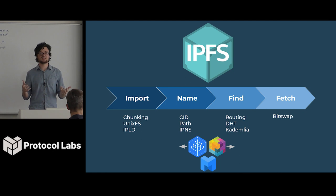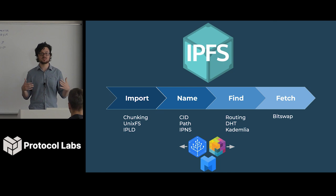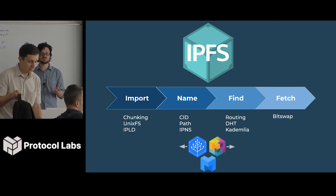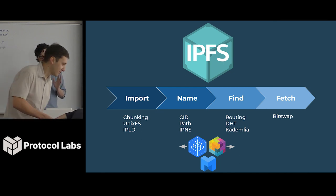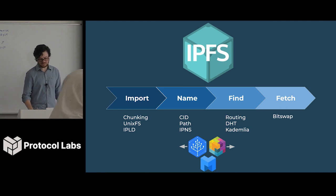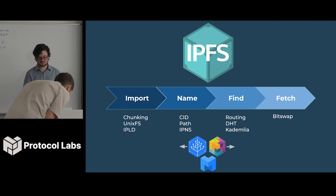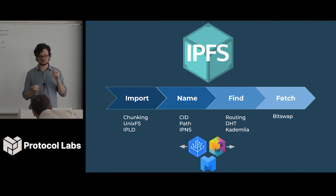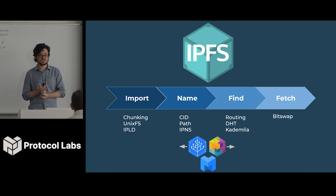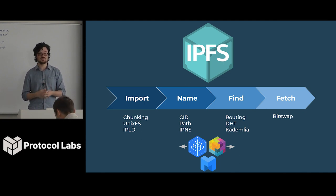In IPFS, all content is addressed by hash, and that means you can't change the content. So we need a system — we use something called copy-on-write — we create a new piece of content whenever you want to change content. Next, you actually need to find the content, which involves something called routing or content routing. We use a DHT, specifically Kademlia. Finally, you need to fetch it, and for that we use something called BitSwap.